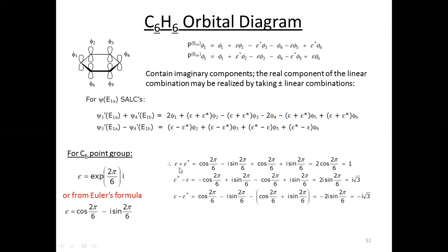Now I substitute these values. For epsilon + epsilon*: putting in cos(2π/6) − i·sin(2π/6) plus cos(2π/6) + i·sin(2π/6), the imaginary terms cancel, leaving 2·cos(2π/6). Since 2π/6 corresponds to 60°, cos(60°) = 1/2, so 2·cos(2π/6) = 1. In the same way, solving for epsilon* − epsilon gives −i·√3.